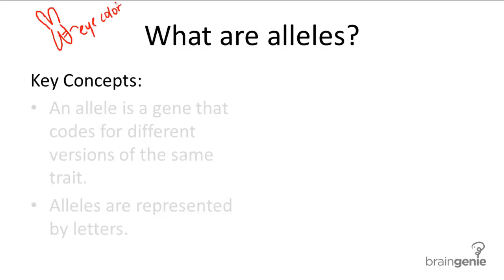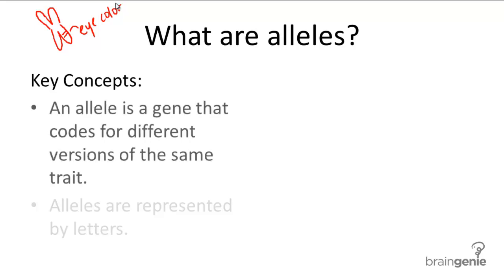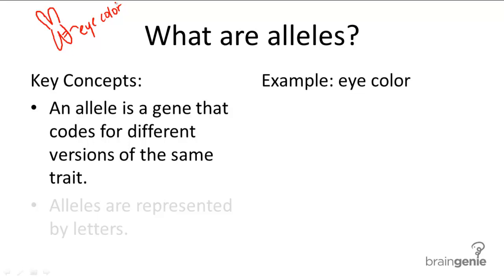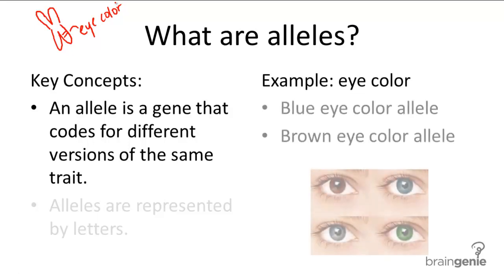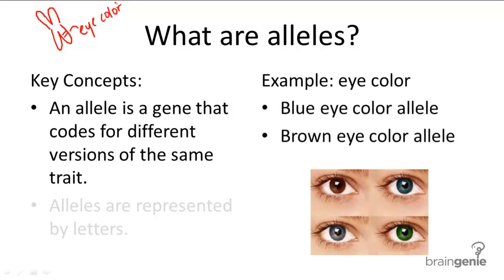An allele is the specific group of genes that codes for different versions of that characteristic. So if you're talking about eye color, you could have brown eyes or blue eyes. If you're talking about hair color,